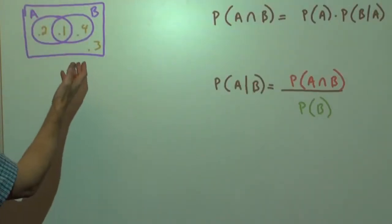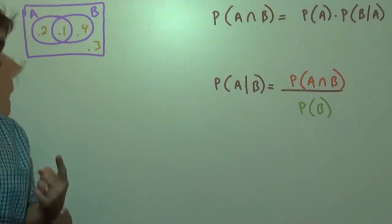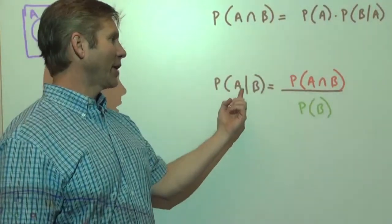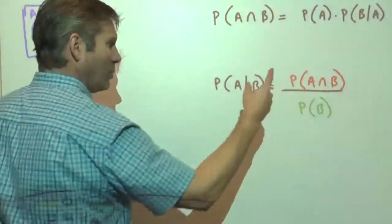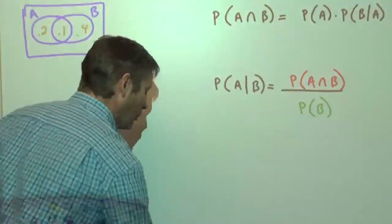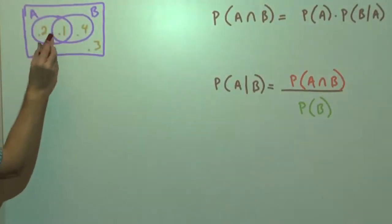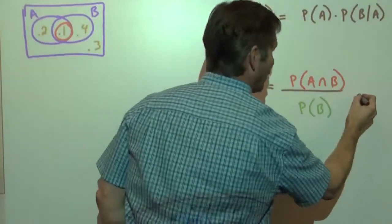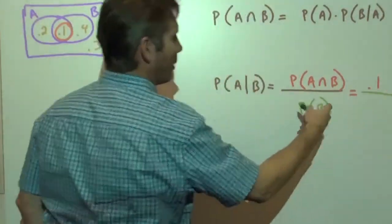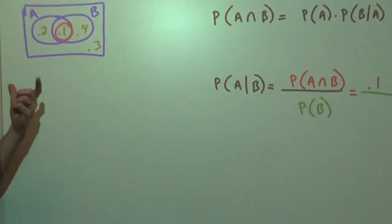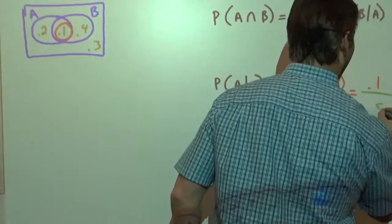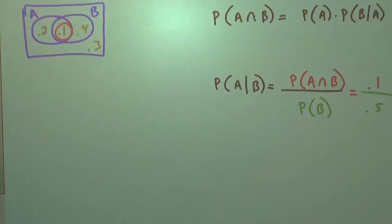For example, if we have a Venn diagram and you're looking at it when only one thing is being selected — so if we wanted to find the probability of A occurring given that B has occurred — since we've selected one thing, this AND means intersection. All we have to do to get our probability is take the intersection, 0.1, and divide that by the probability of B occurring, which is 0.5. So the answer would be one-fifth.